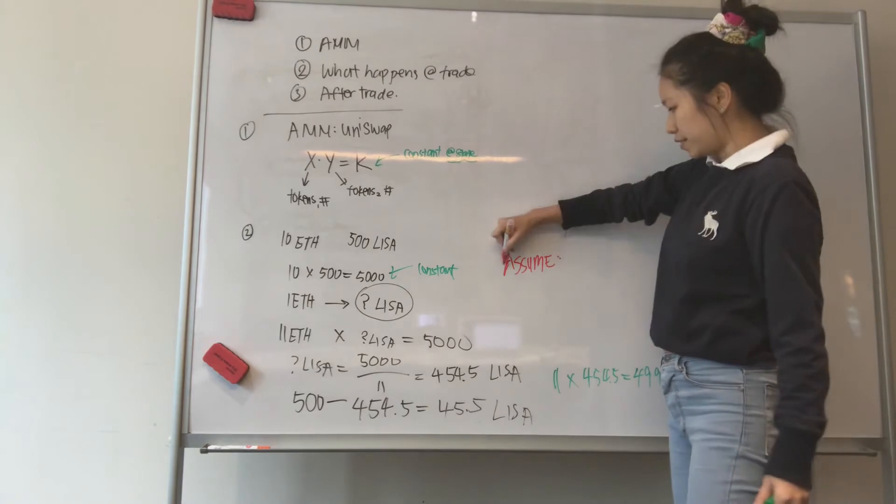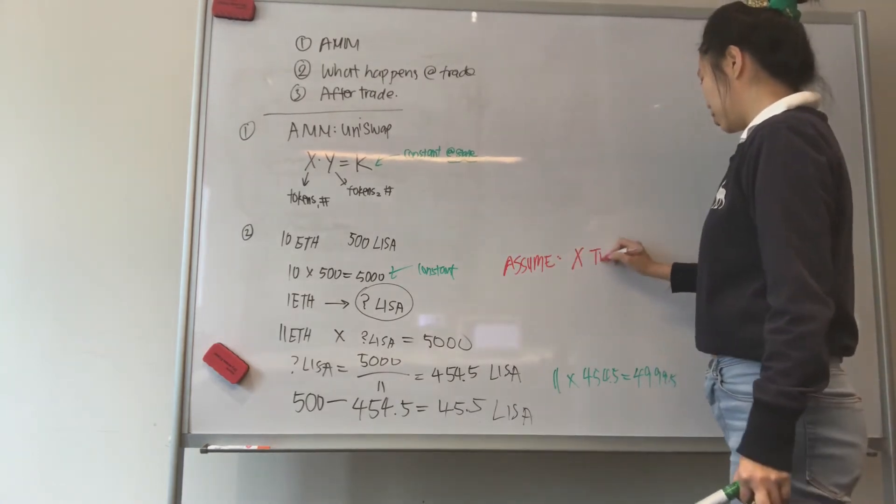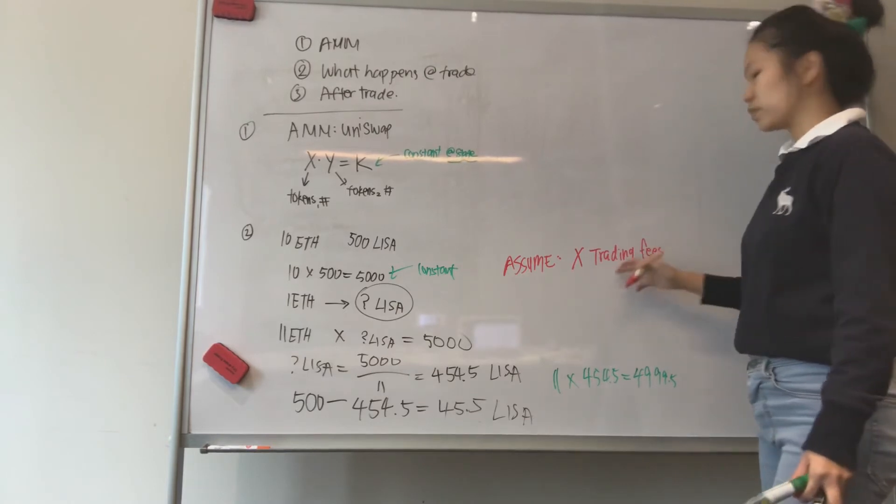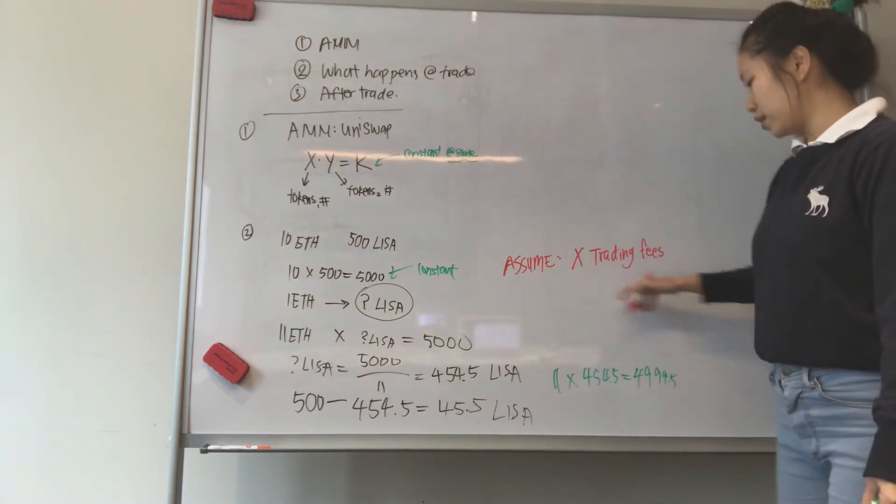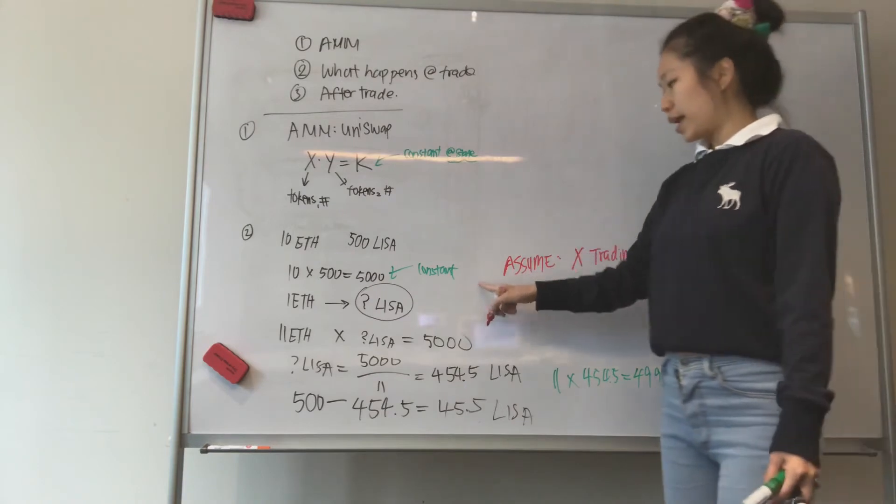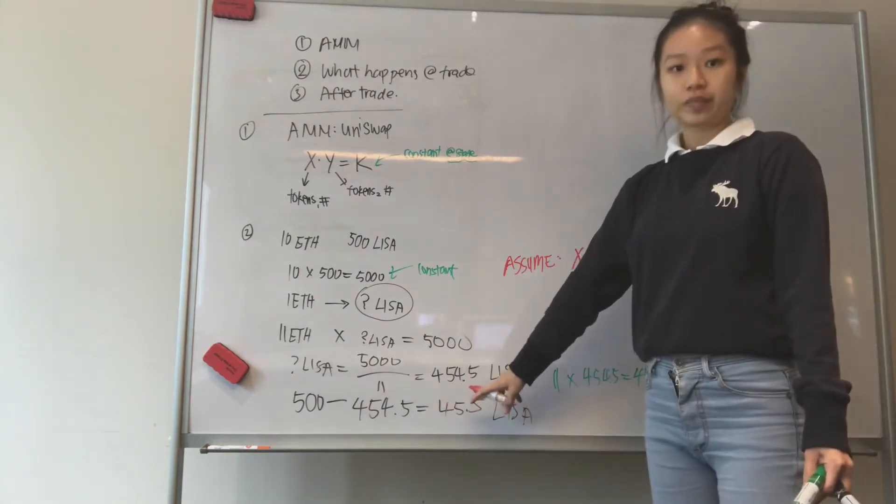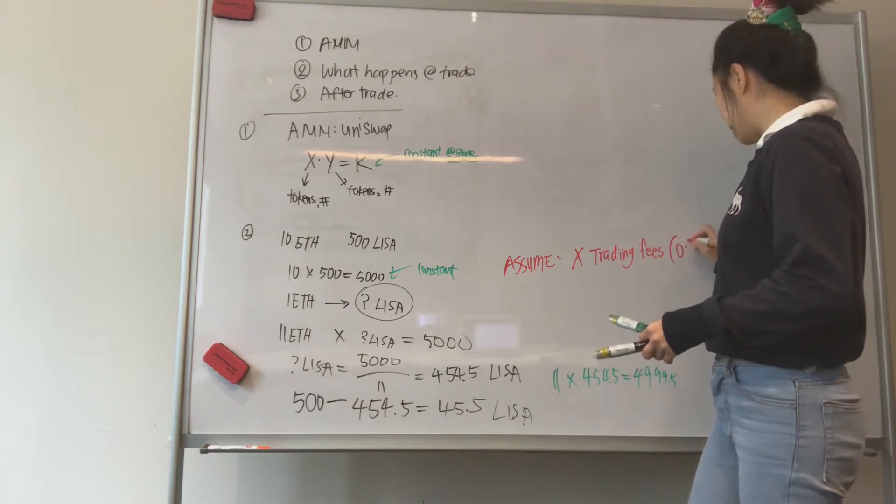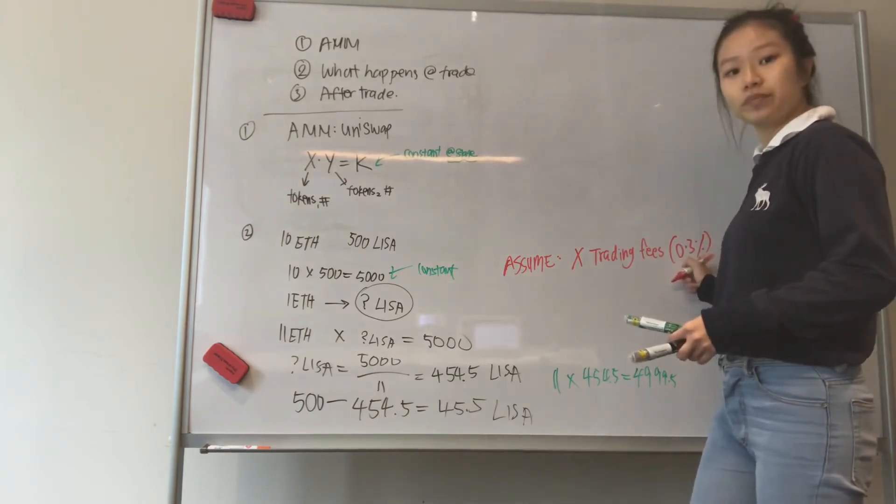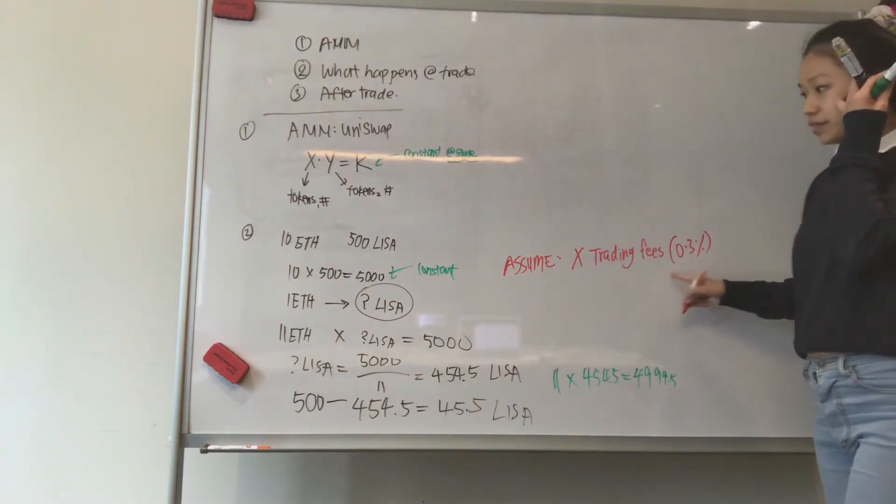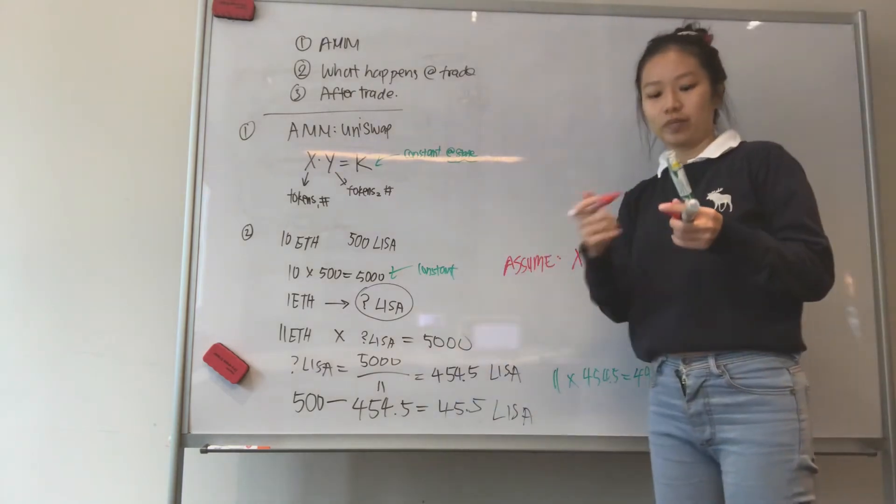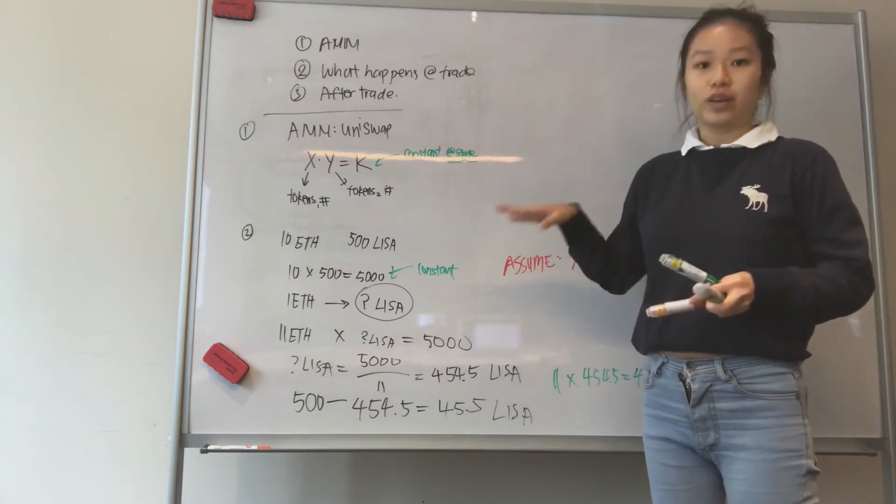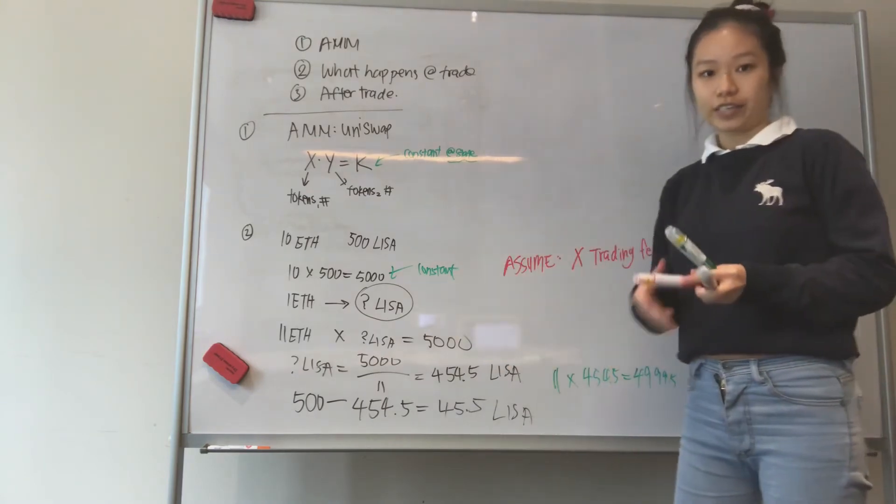What I'm assuming here is that there is no trading fees. So that's why we can always come back to almost the same constant and we can have this kind of trade. But in reality, there is a trading fee which is 0.3% at Uniswap. And this amount will affect a little bit more complication. It's not that complicated. It's just a bit more math to deal with. But it's fine. Let's make it simple. Without trading fees, this is what you get.